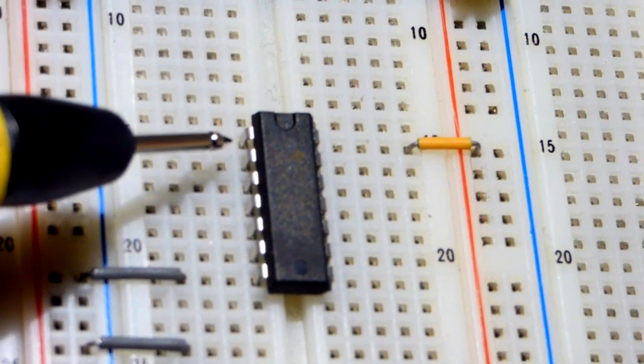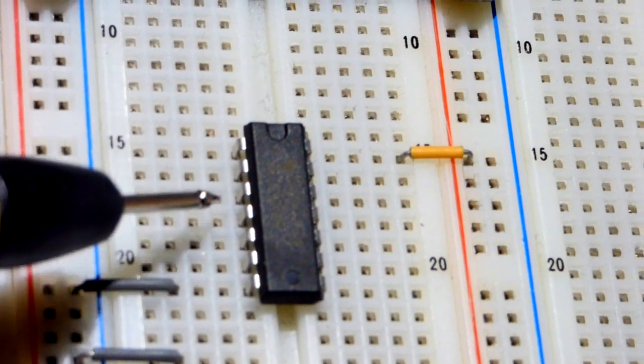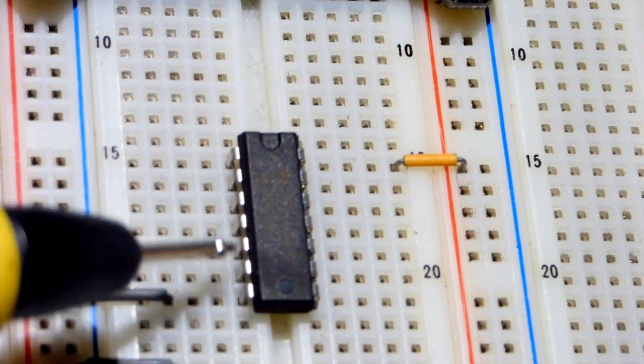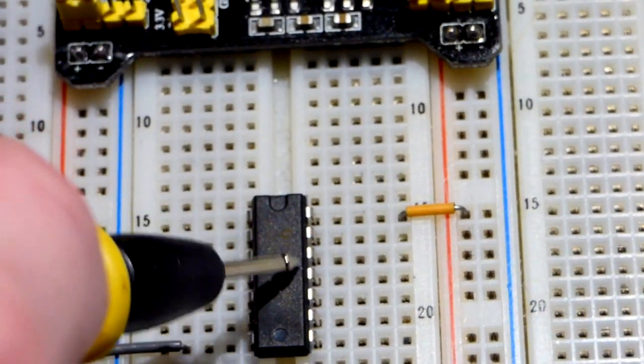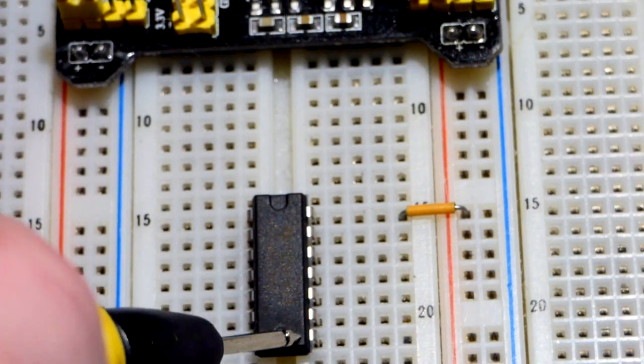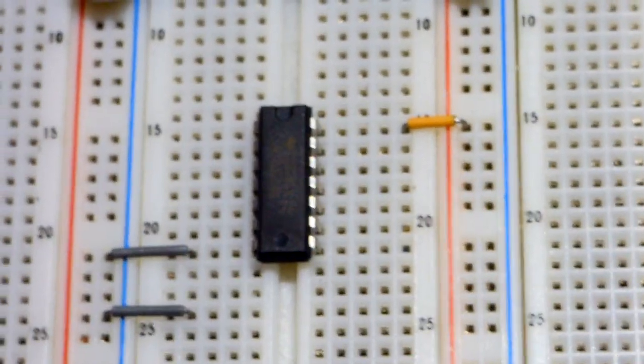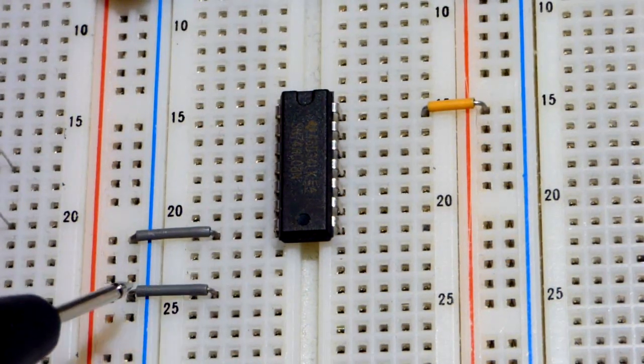Here's one of the AND gates: input, input, output. Input, input, output. So that's the one we're going to use. There's also two AND gates on this side: input, input, output; input, input, output right there. We have this jumper going...